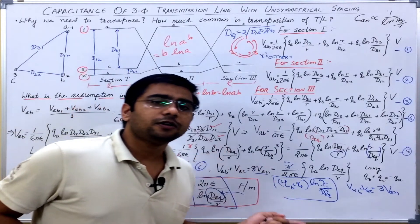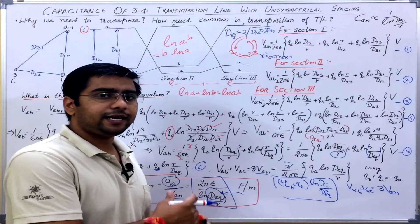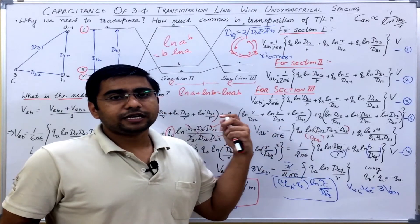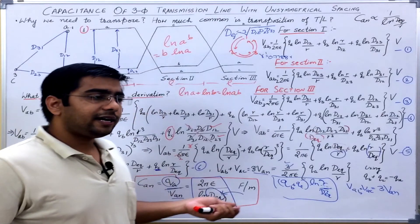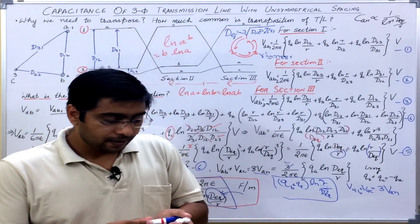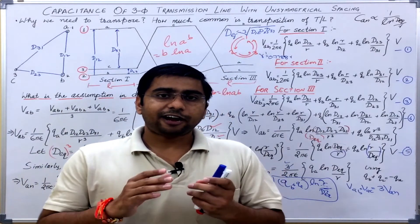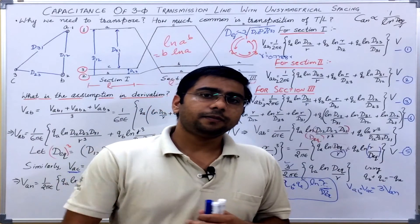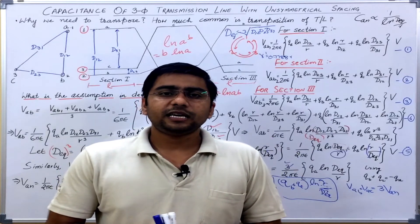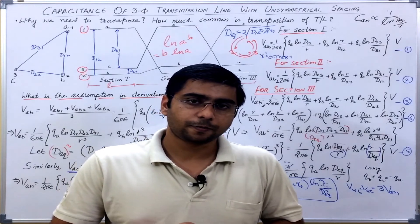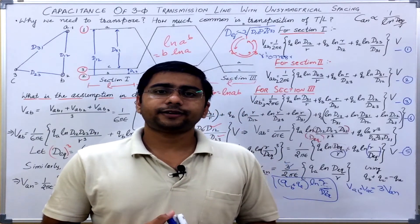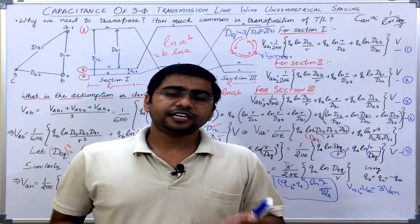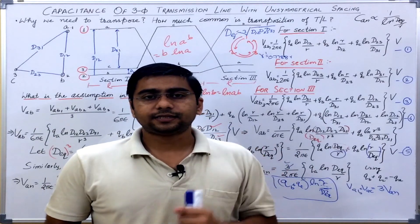This equivalent spacing gives the same expression as for symmetrical spacing, and it is the same factor obtained when deriving the expression for inductance. So we see a similarity: the same tricks and concepts used for deriving inductance can be used for capacitance derivation as well. In the next lecture, we will derive an expression for the effect of the presence of earth — since earth acts as a conducting plane, we can replace it with the image of the conductors using the image method. If you find these lectures helpful, please share and subscribe to my YouTube channel and join the Telegram group for discussing doubts on the topics covered. Thank you.